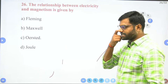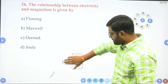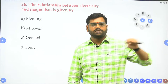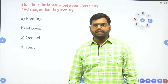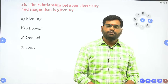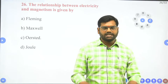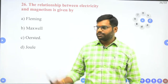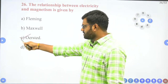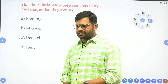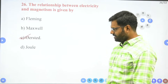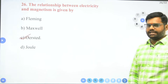Relationship between electricity and magnetism is given by — at the start of the chapter we discussed the experiment with a current carrying conductor placed in the south-north direction, with a magnetic needle below it. When current flows, the needle deflects due to the magnetic field produced. This relationship between electricity and magnetism was given by Oersted. Fleming gave directions of magnetic force and induced current; Maxwell's right hand thumb rule gives magnetic field direction.